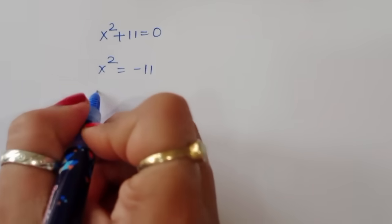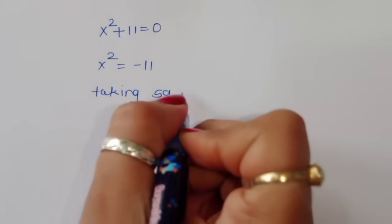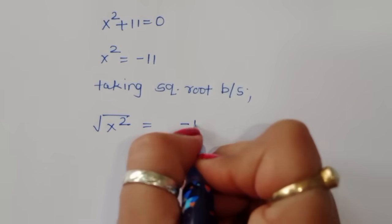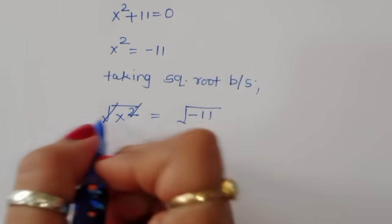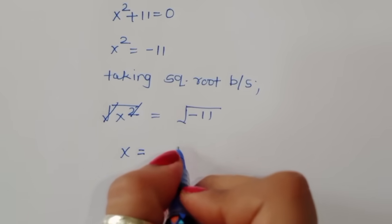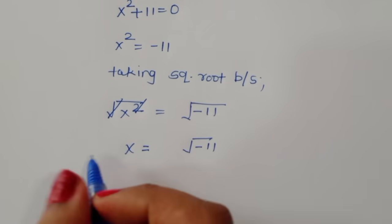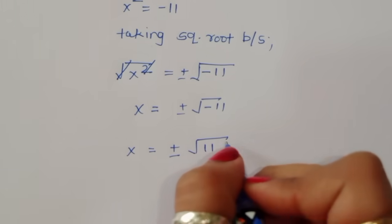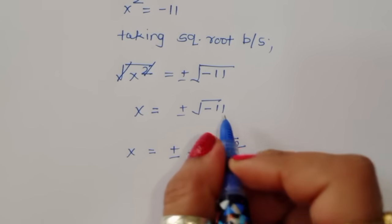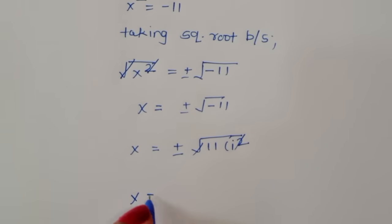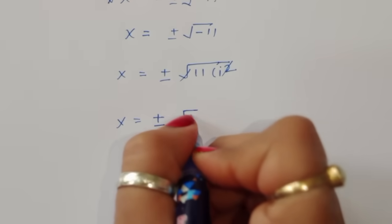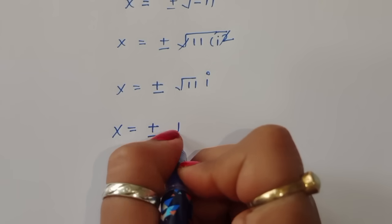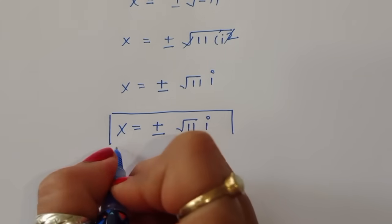Taking the square root of both sides: x = √(-11). Since -1 = i², we can write x = ±√11·i. This is an imaginary solution. So the value of x is ±√11·i, but this is a complex/imaginary solution.